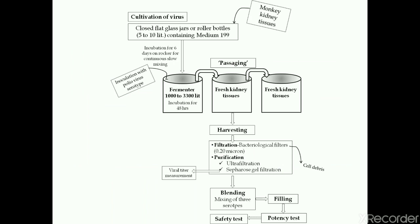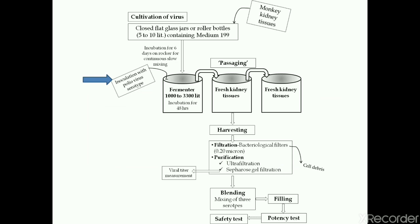The flow sheet for the production of Sabin vaccine begins with cultivation of viruses in 5 to 10 liter roller bottles containing sterile M199 medium. These are inoculated with monkey kidney tissues, followed by incubation and then inoculation with polio virus serotypes in large fermenters having a capacity of 1000 to 3300 liters.